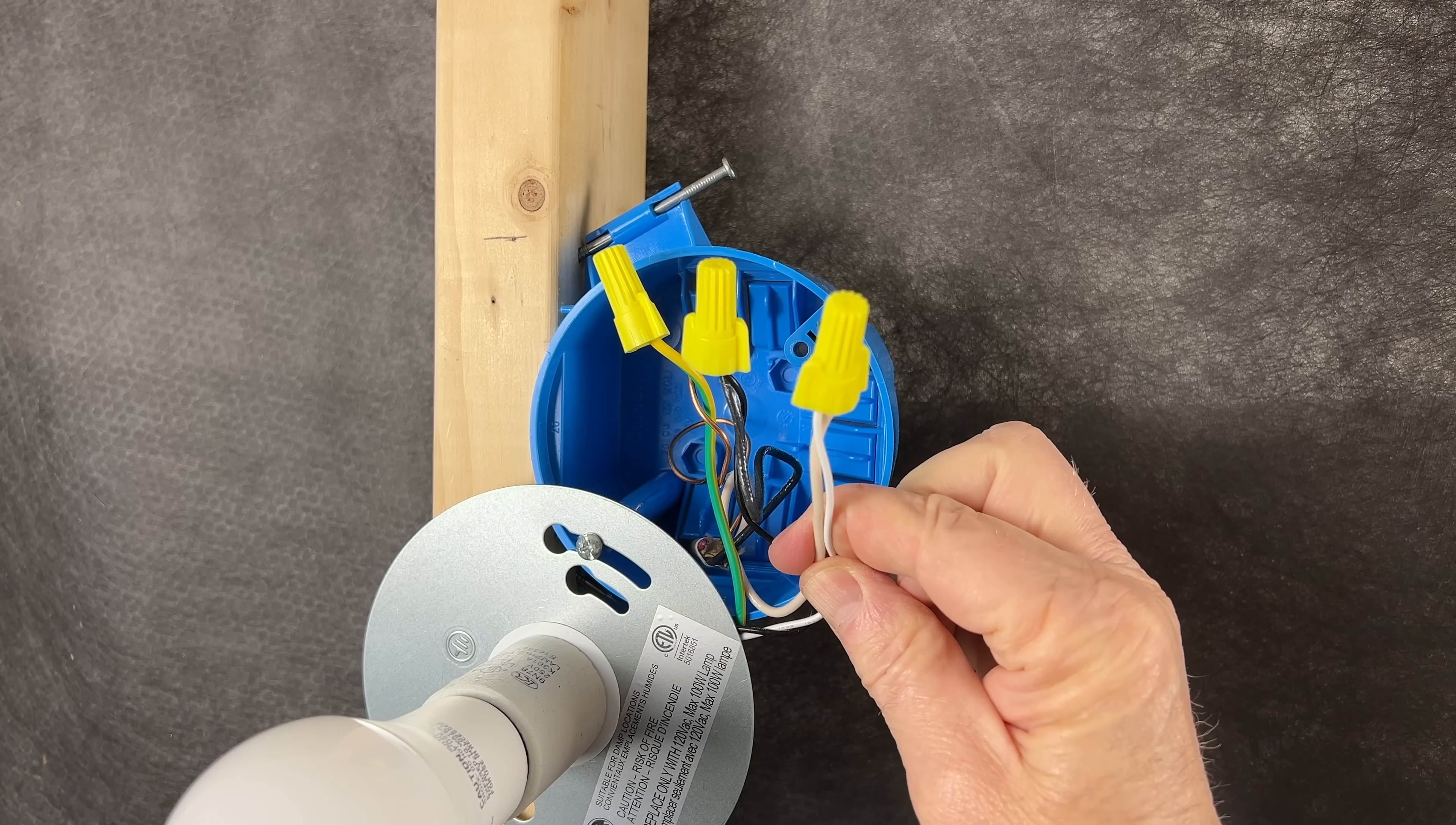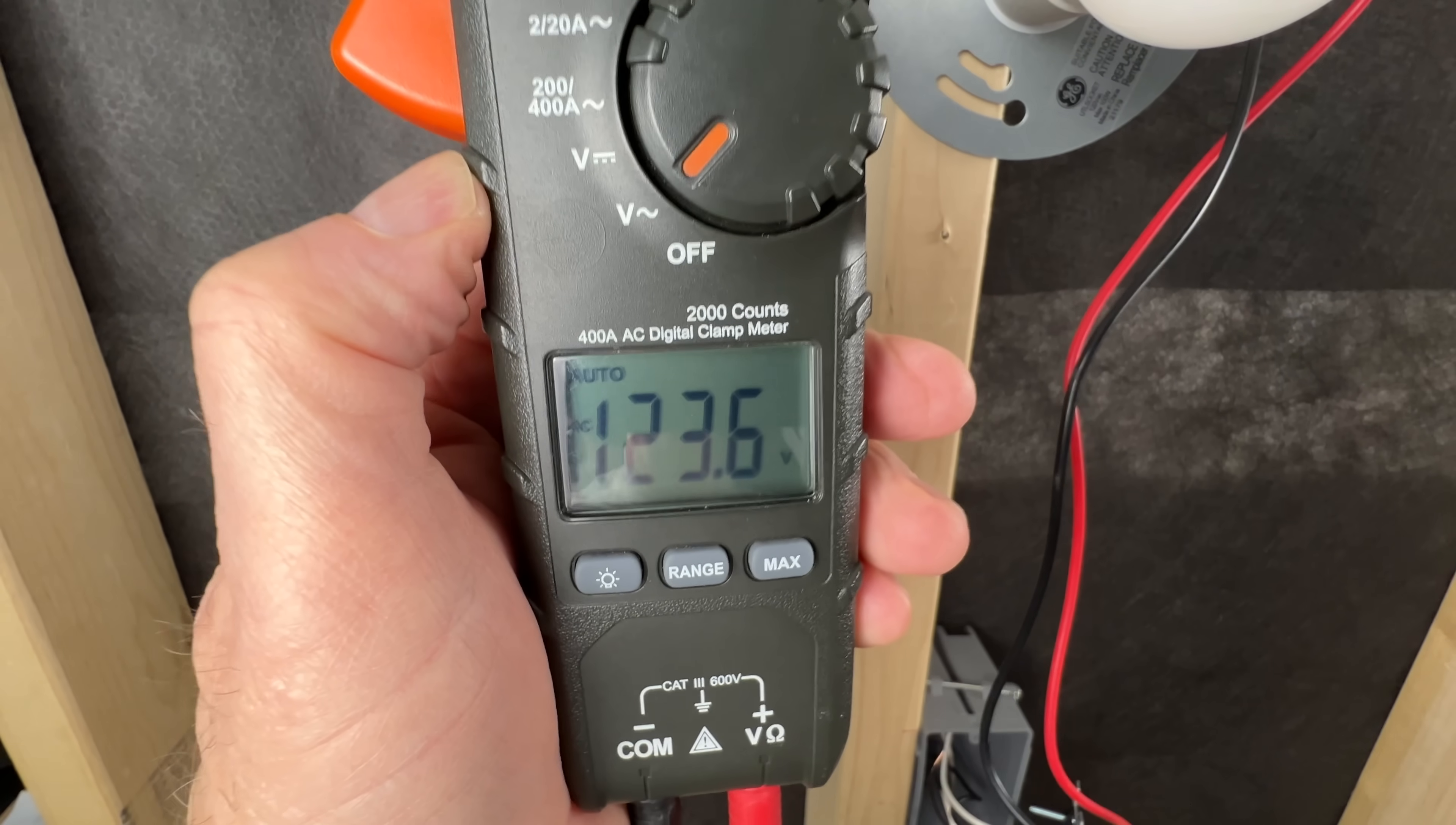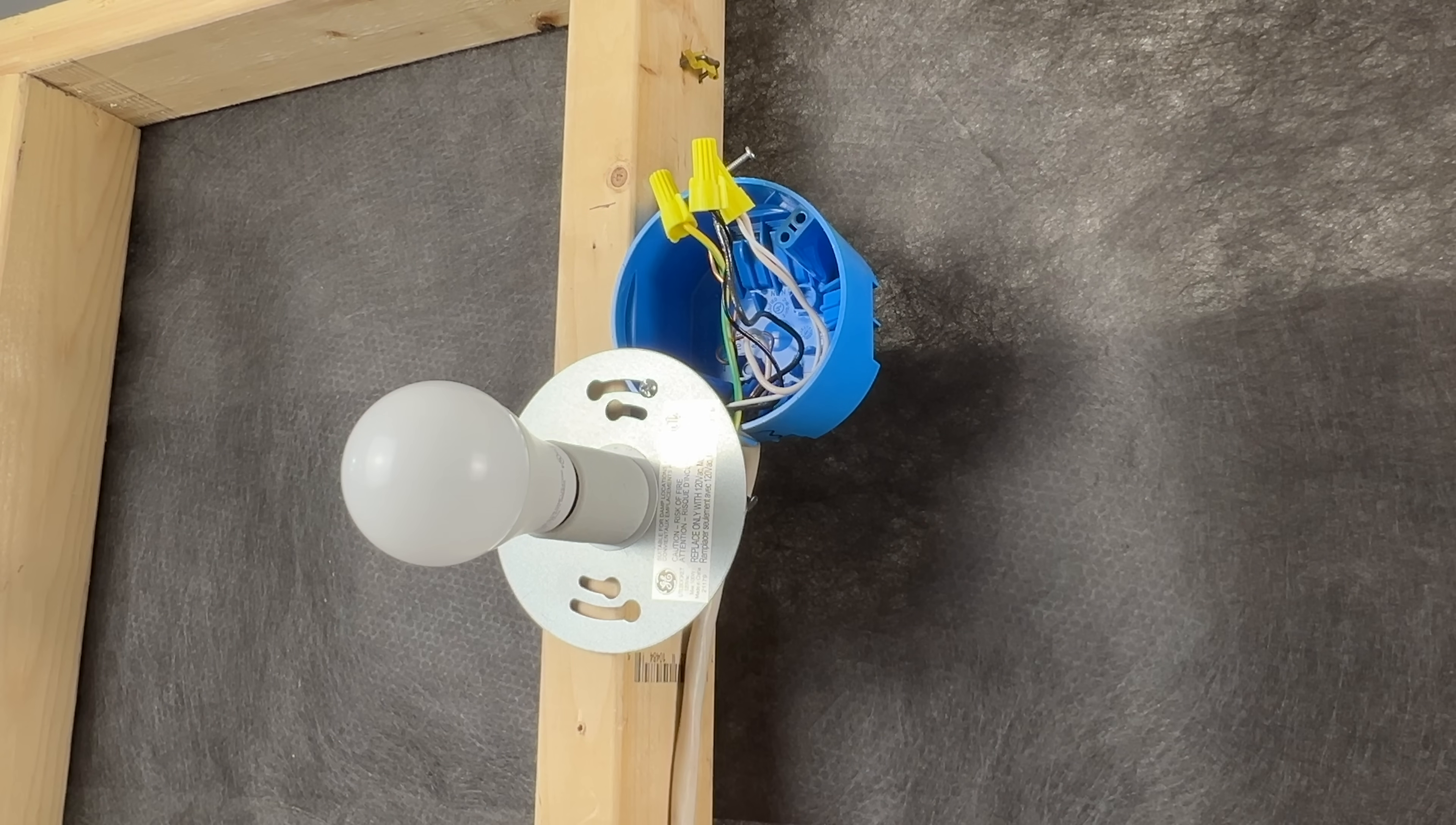White wires are typically used for our grounded neutral conductor, if not re-identified as a hot or a switch leg. Having it energized can be confusing and dangerous. Third, we're reversing the polarity of the light depending on the position of the switches.